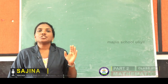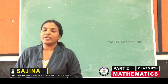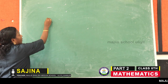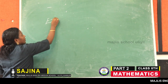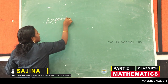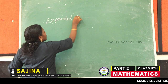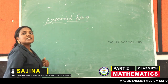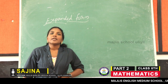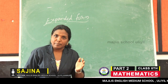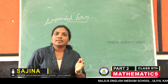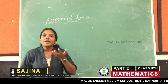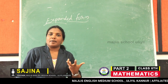The expanded form and short form of a number. First, expanded form. What is the expanded form of a number? Expanded form of a number means the sum of the place values of the digits in a number.